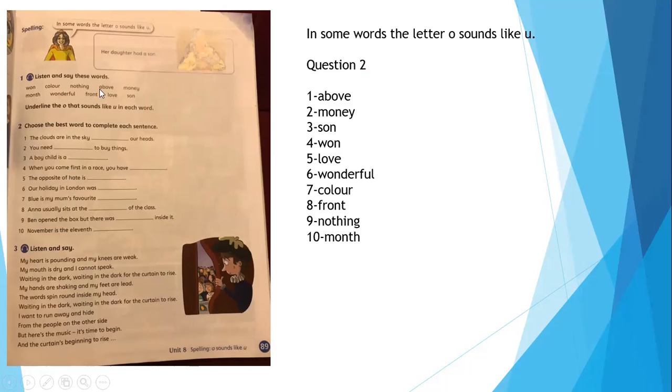Here, your teacher, we are going to use these words from exercise number one according to the meaning. The clouds are in the sky above our head. You need money to buy things. A boy child is a son. When you come first in a race, you have won.